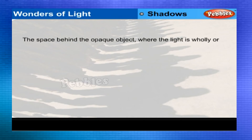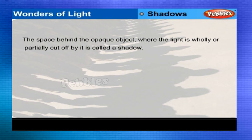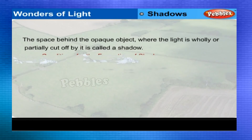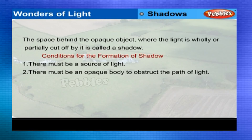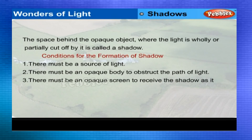Shadows: The space behind an opaque object where light is wholly or partially cut off is called a shadow. Conditions for the formation of a shadow: there must be a source of light; there must be an opaque body to obstruct the path of light; and there must be an opaque screen to receive the shadow, as it cannot be formed in air.